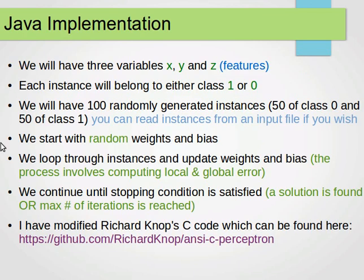For the implementation, we will have three variables x, y, and z — these are our features, numerical data. We'll have 100 instances; each instance will belong to either class 1 or class 0, so we only have two classes. The code randomly generates 50 points of class 0 and 50 points of class 1, giving us 100 points overall.